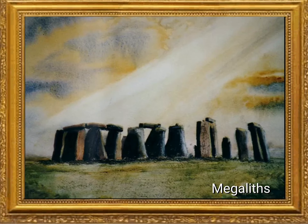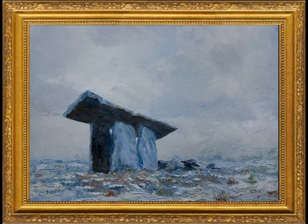Megaliths are large stones used in ceremonial or ritualistic structures and are well known for their preservation. They are often found in burial sites. The most prevalent type of megalithic structure, the portal tomb, is commonly known as a dolmen. Dolmen are large capstones elevated at an angle and supported by dual standing stones.